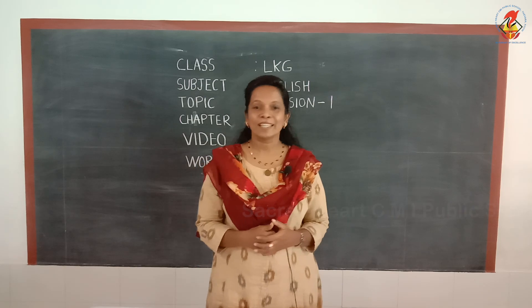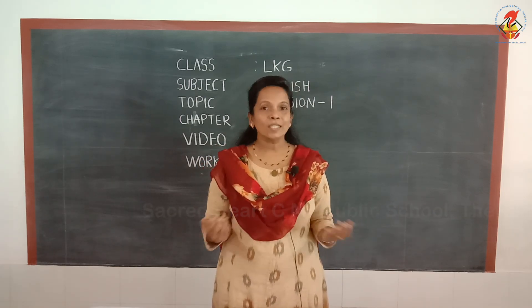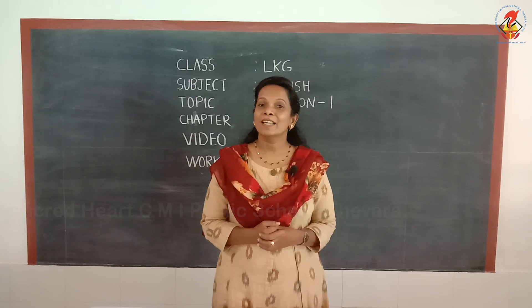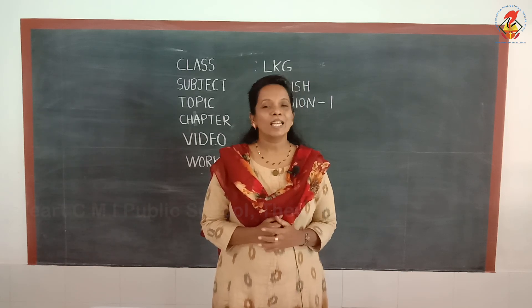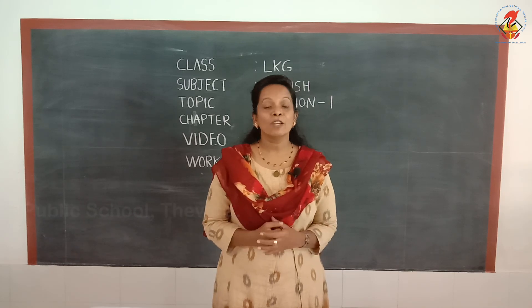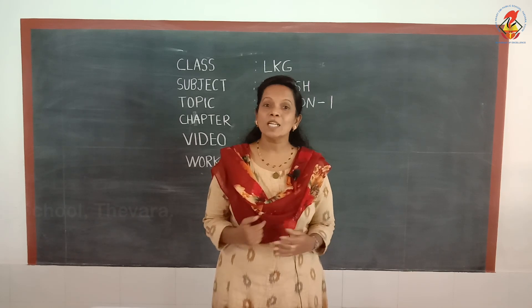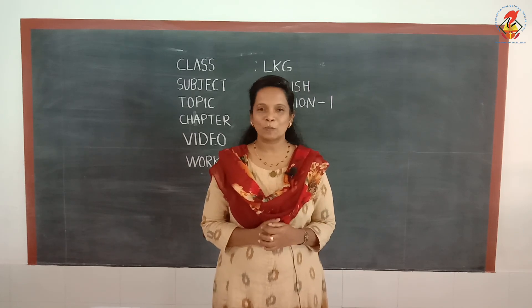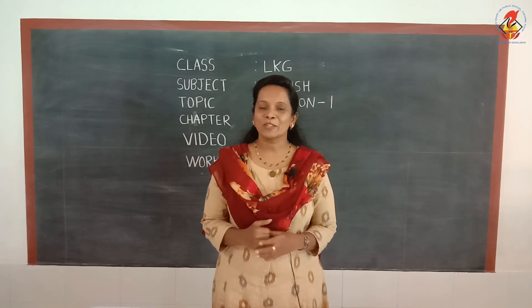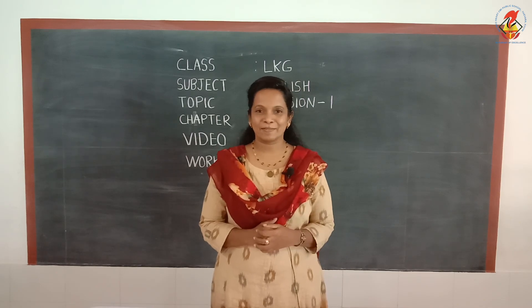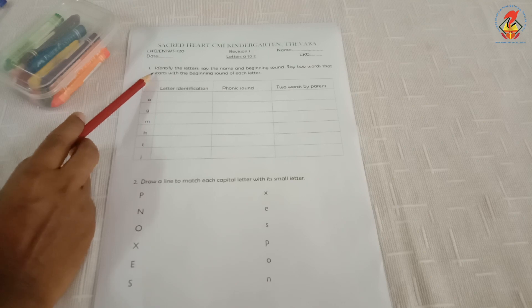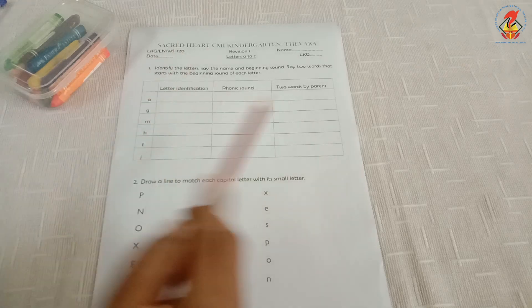Children, you have learnt to read and write all the 26 letters of English alphabet from letter A to letter Z by now. And you know the phonic sound and the words related to each letter or the beginning sound too. Now we are going to do a worksheet to revise the letters. Here the first question is to identify the letters, say the name and beginning sound.